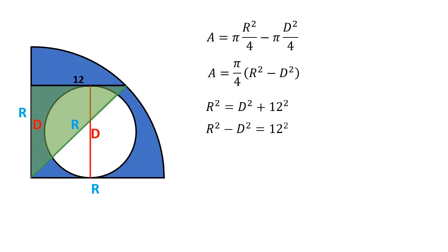We can substitute the value of r squared minus d squared in the previous relationship. By doing this, we will obtain that the value of the area is 36 times pi.